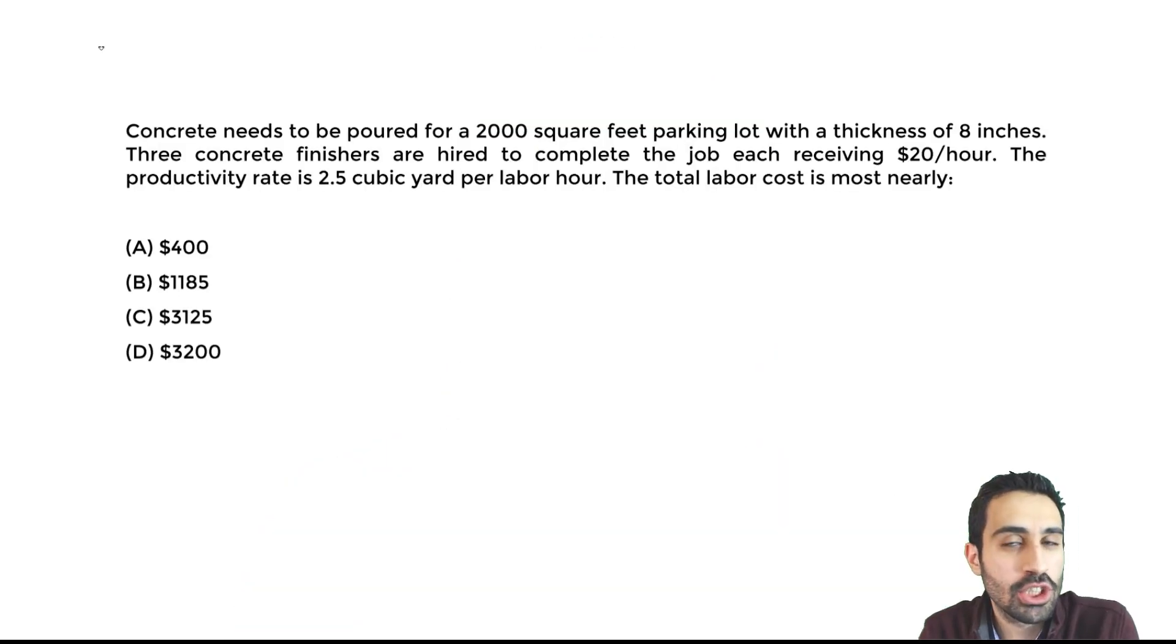Easy points. Let's make sure we get it. Please pause the video, attempt this on your own and see if you get what I get. Now let's get it. We have concrete needs to be poured for a 2,000 square foot parking lot with a thickness of 8 inches. Three concrete finishers are hired to complete the job, receiving $20 per hour for each concrete finisher. The productivity rate is 2.5 cubic yard per labor hour. The total labor cost is most nearly what?